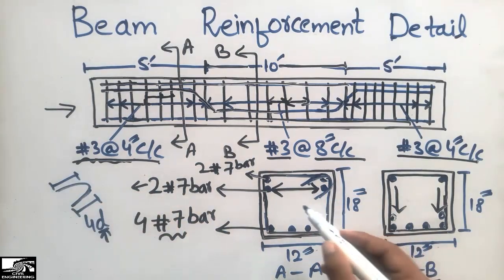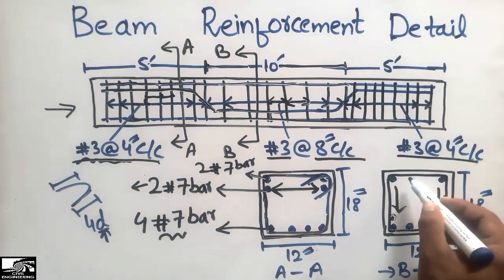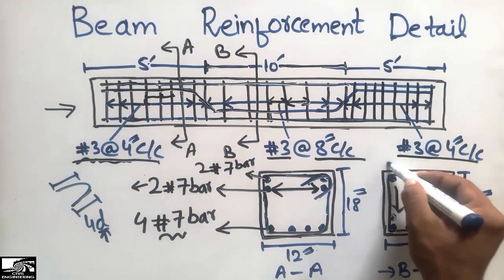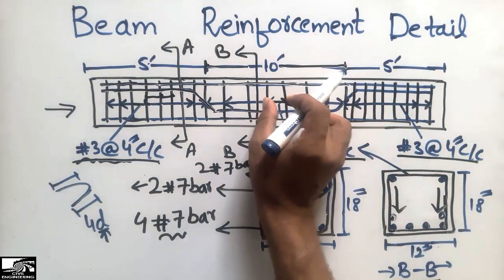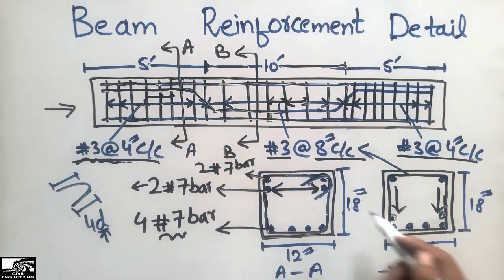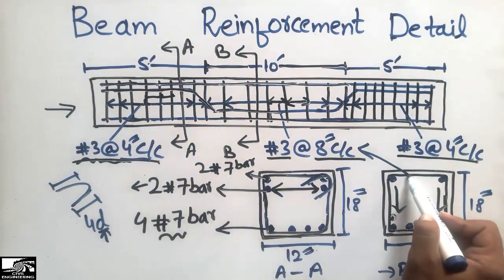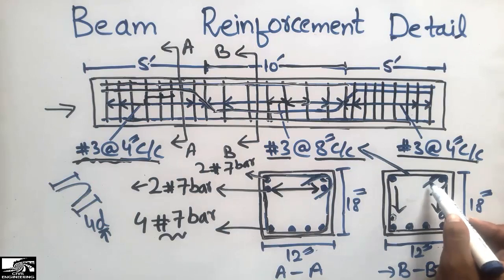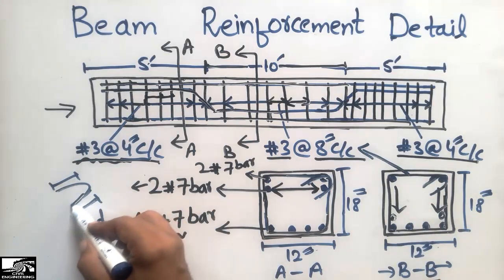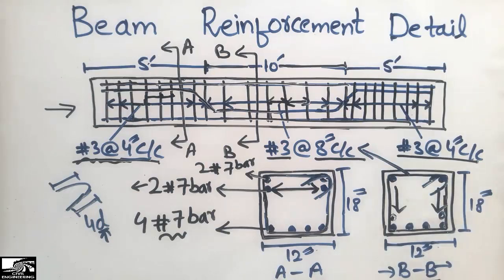The same stirrup is also visible in Section BB, but here you note that the stirrup is number 3 at 8 inches center to center, since Section BB corresponds to the 10-foot mid-span zone with wider stirrup spacing. Section AA shows stirrups at 4 inches center to center, while Section BB shows 8 inches center to center. The seismic hook is also present here with a hook length of 4d, where d is the diameter of the number 3 bar. The seismic hook is used to resist earthquake forces.